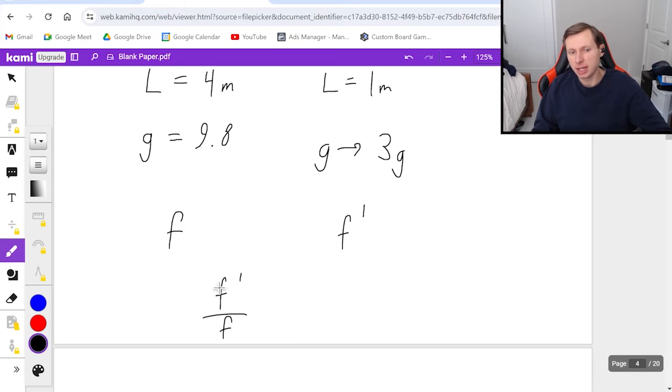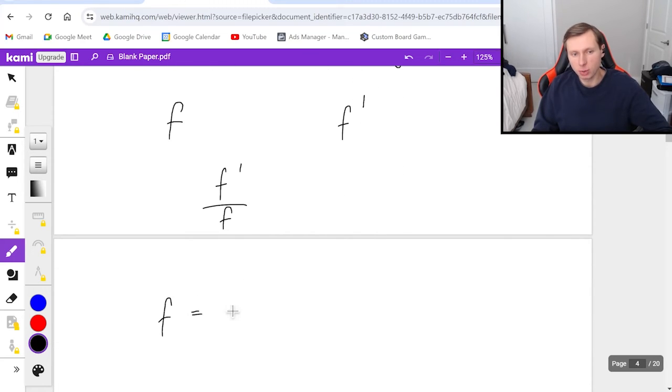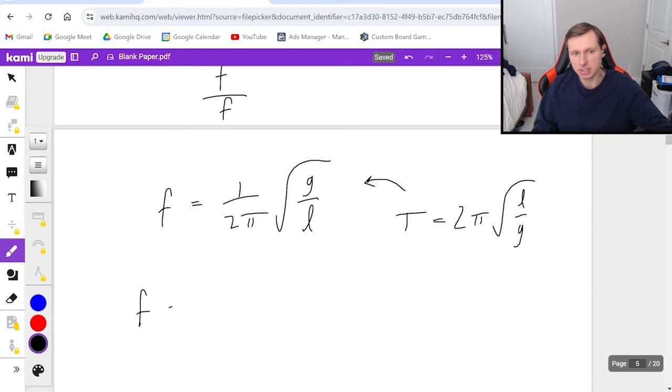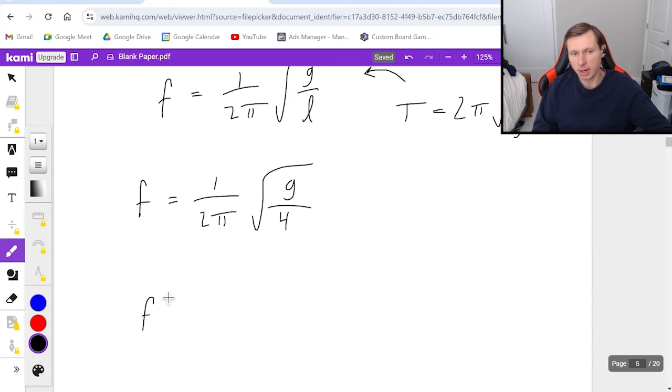So here's what we're going to do for this one. First, I got to find f and f prime. If you forget the equation f equals 1 over 2 pi root g over l, the other way you can remember this is just remembering the period equation, 2 pi root l over g, and then taking the reciprocal of that, and that's you get to f here. But assuming we already have this equation, it's very simple. f is equal to 1 over 2 pi times, I'm just going to write g, I don't need to write 9.8, divided by length was 4 originally. And then for f prime, my new one, it's going to be 1 over 2 pi times the square root of now 3g, and length is now 1. So here's my equation for f prime.